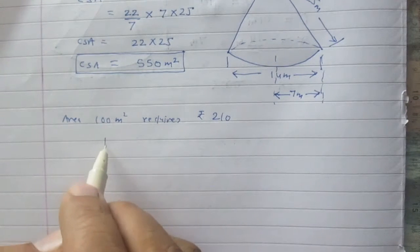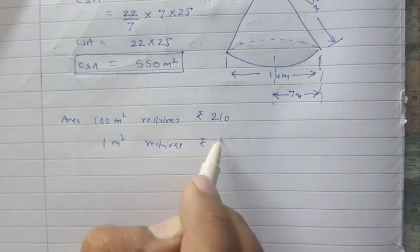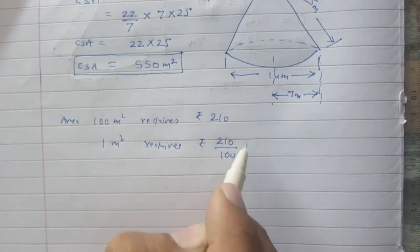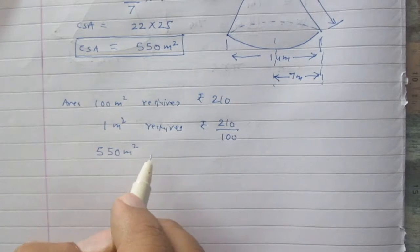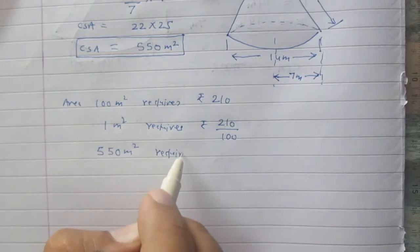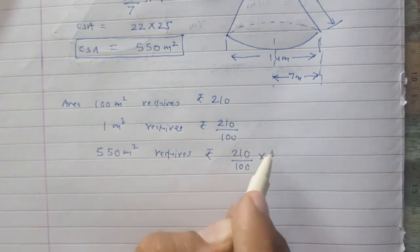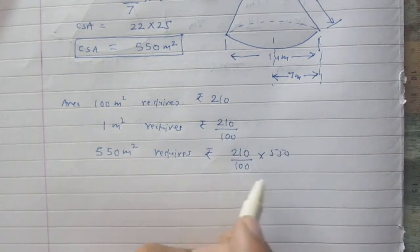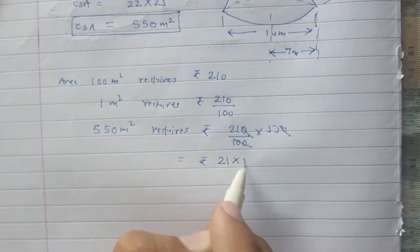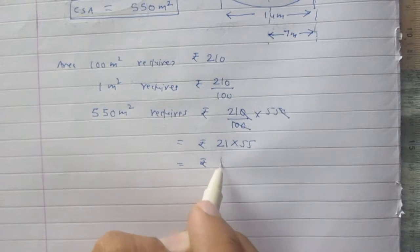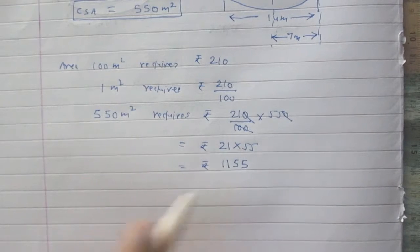So 1m² of area requires Rs 210 divided by 100. So 550 meter square of area requires rupees 210/100 × 550. After calculation it is rupees 21 × 55, which is Rs 1155.